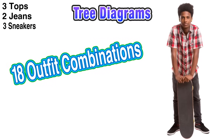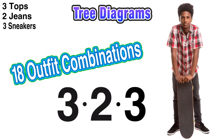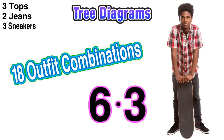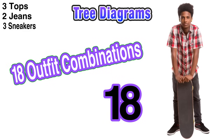Here's a shortcut for finding this total number without actually constructing a tree diagram. Notice if we take 3 — the total number of tops — times 2 — the total number of jeans choices — times 3 — the total number of sneakers — and multiply those three values together, 3 times 2 times 3: we know that 3 times 2 is 6, and 6 times 3 is equal to 18, which is the total number of outfit combinations we found using the tree diagram. So be aware of how to construct the tree diagram, and also be aware that you can multiply the number of choices together and that product will represent the total number of combinations.